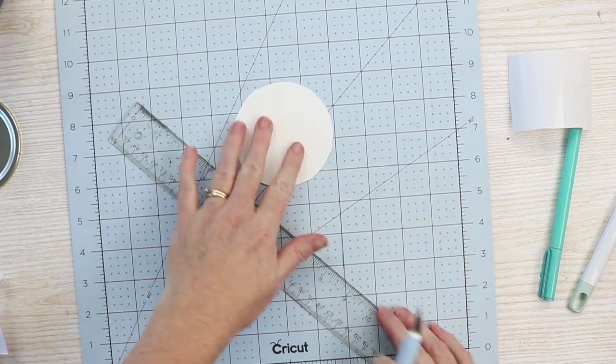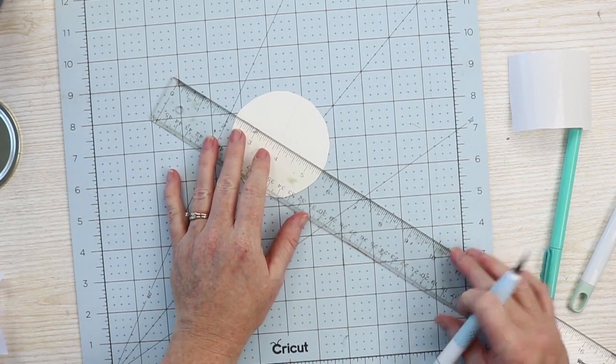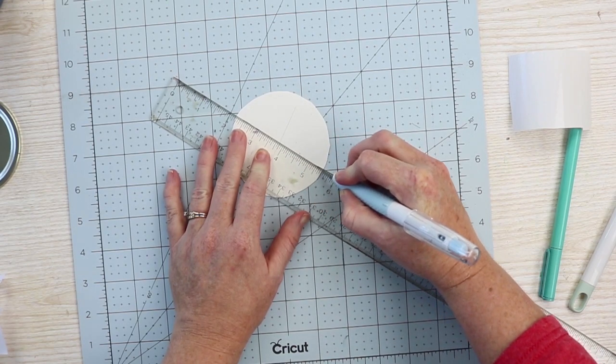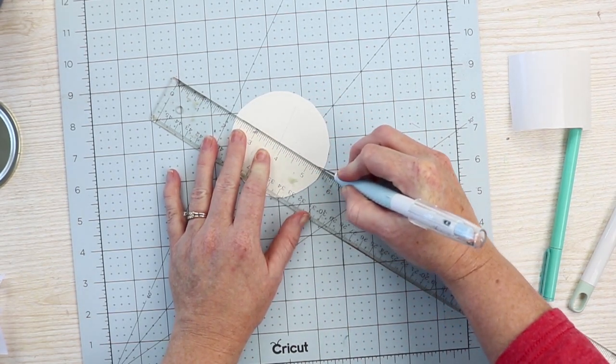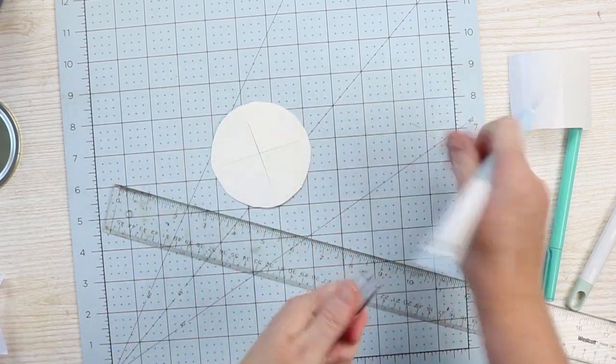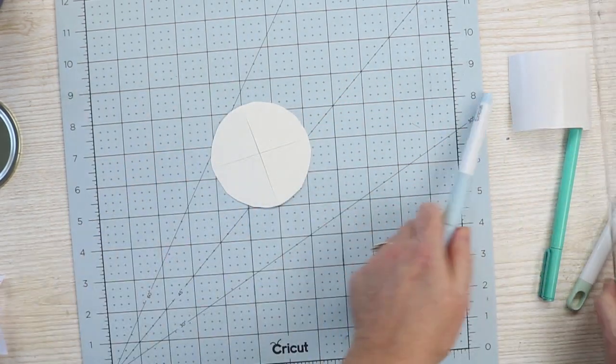As you can see, it's still connected on both sides, but the cut itself is all the way through the cardstock. Then I'm going to make one in the opposite direction, again not going all the way to both sides. So now I have an X and the circle is still intact.